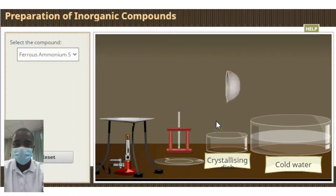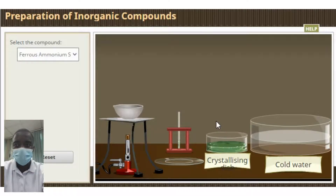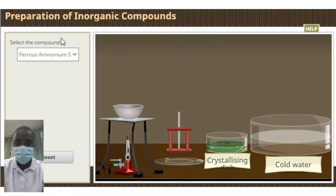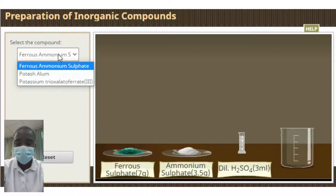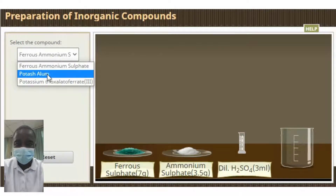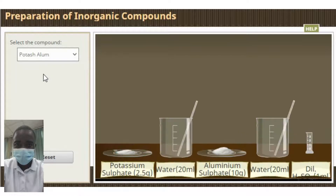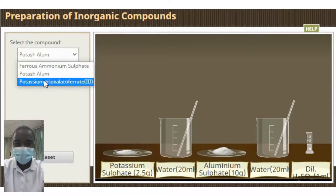One example of a double salt is sodium chloride, or table salt. When sodium and chlorine combine, they form a compound with a one-to-one ratio of the two elements. However, table salt is actually a mixture of two double salts, sodium chloride and potassium chloride. This mixture is sometimes called common salt because it is the most common type of salt used in cooking.